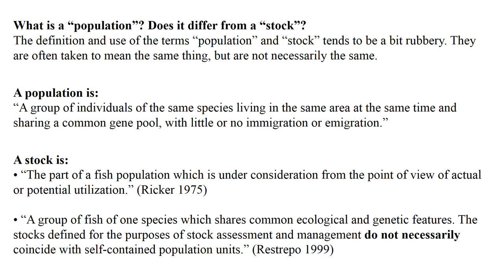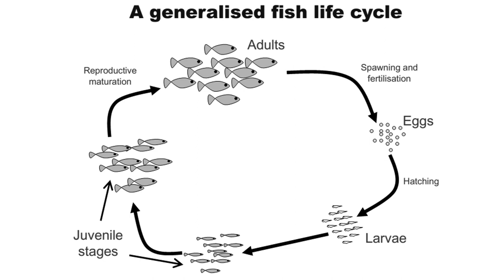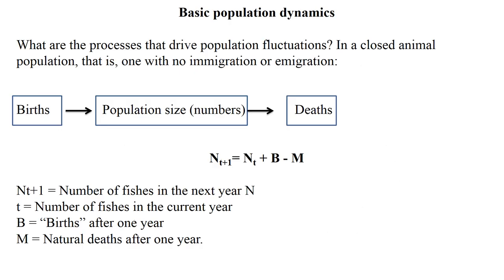Now let's look at the basic life cycle of a fish. First, adult sexually matured fish breed and spawn, fertilizing eggs. The eggs hatch into a larval stage, and this larva grows to the juvenile stage, which then reaches the adult or reproductively mature stage.